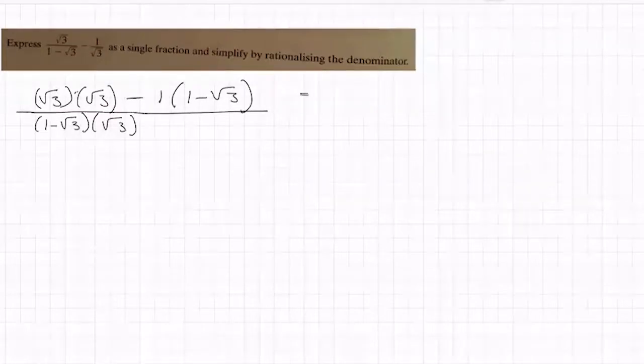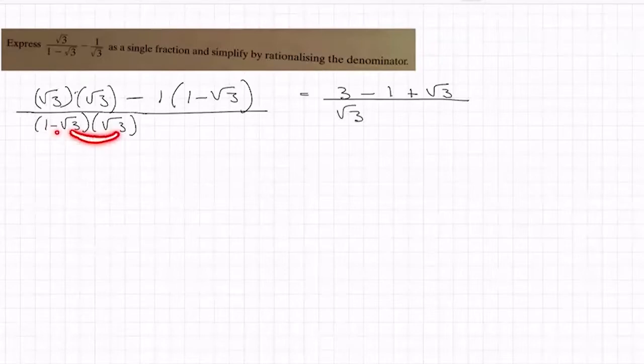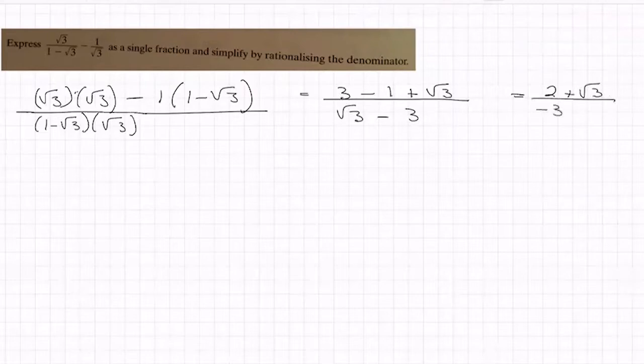So then let's just tidy this up. √3 by √3, we had that rule last week, will give us 3. Now I have minus 1 by 1 is minus 1. Minus by minus plus 1 by √3 is √3. Over, then on the bottom, I have 1 times √3 gives me √3, and minus √3 by √3 gives me minus 3. Let's tidy him up. 3 minus 1 is 2 plus √3 on the top. We tend to write the rational piece first, so I would write the bottom as minus 3 plus √3.